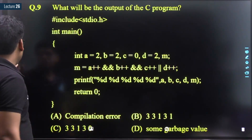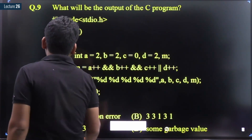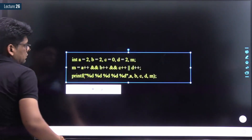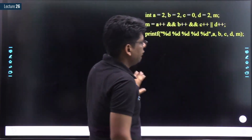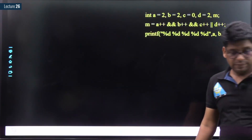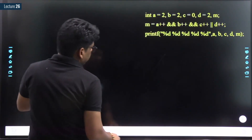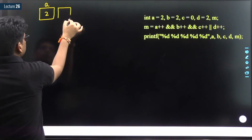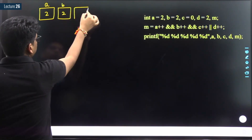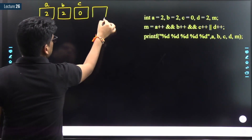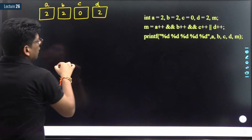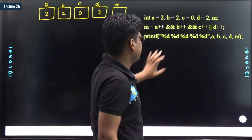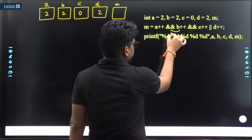This is a big question but a good one. Please pause the video and try to solve it yourself. We have 5 variables: a is 2, b is 2, c is 0, d is 2, and m is garbage. Now let's understand the expression. Since b++ is between two AND operators with the same priority, associativity is left to right, so b++ is with the left AND. For AND and OR, we go left to right but we must parenthesize the expression correctly.